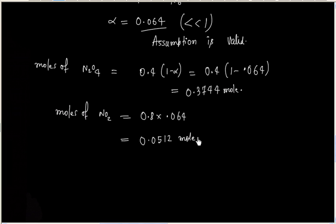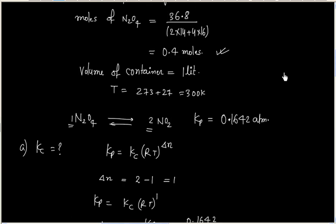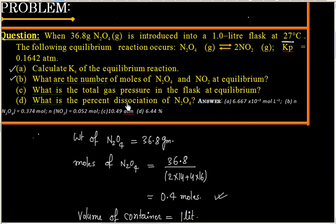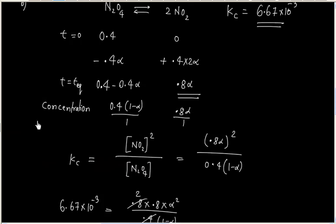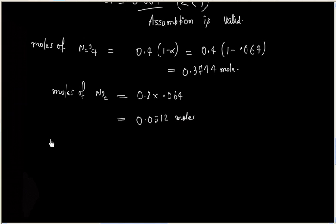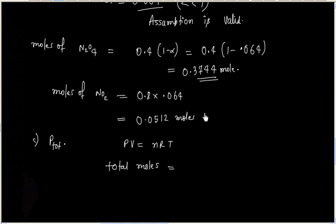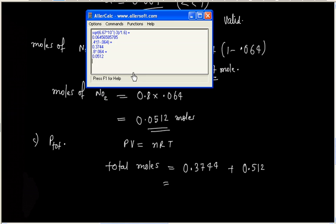These are the moles of NO2 and N2O4 respectively. Part C of the question asks for the total gas pressure in the flask. We can find total pressure using PV equals nRT. Total moles equals moles of N2O4 plus moles of NO2, that is 0.3744 plus 0.0512, giving total moles of 0.4256.